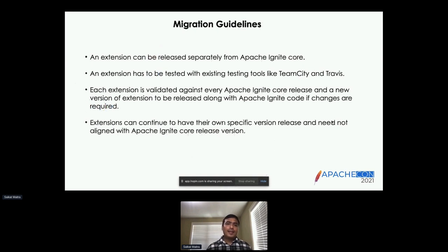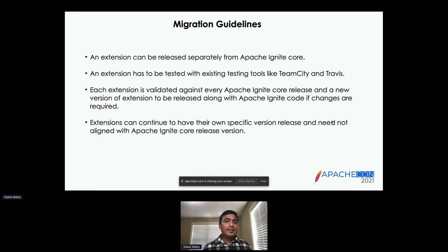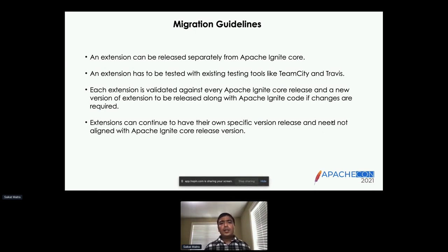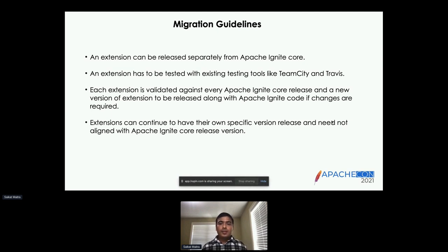Let's look into some of the guidelines we followed while releasing each of these extensions. Each extension can be released separately from Apache Ignite core — they have their own lifecycle for releases, their own testing cycle, validation, and development cycle. Each extension that we migrated or validated to this new release cycle has been tested with TeamCity and Travis, the same tools and continuous integration systems used for Apache Ignite core releases.